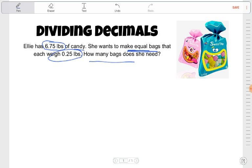Because we are splitting this into equal groups, we are dividing. So our problem is 6.75 divided by 0.25.